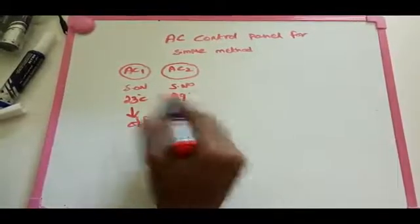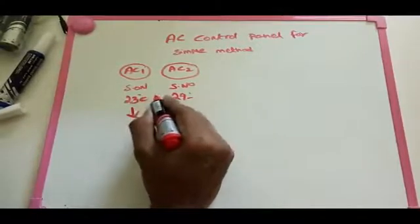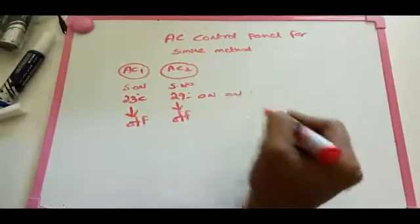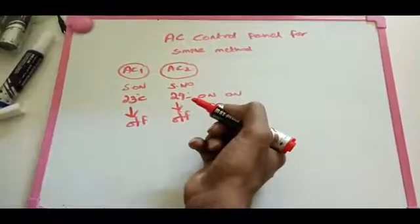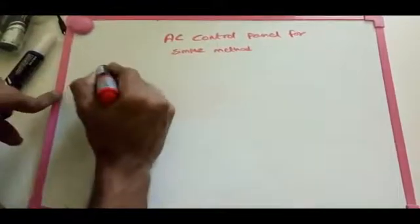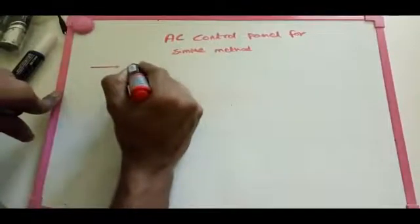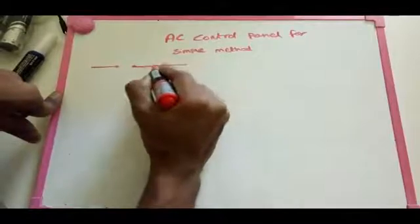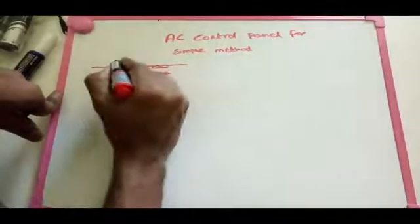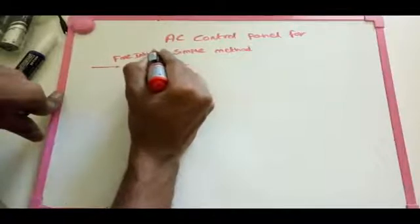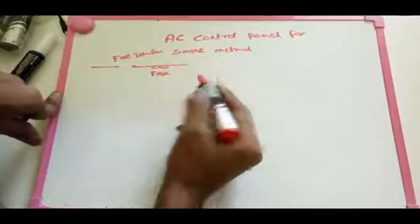Below 20 degrees Celsius, we need to switch off both ACs. That is what we need to maintain in this control diagram. Now we are going to draw the control circuit. First, here is the fire interface — meaning in any fire emergency, this interface will switch off the ACs. After that, this one is the control fuse for safety purposes.